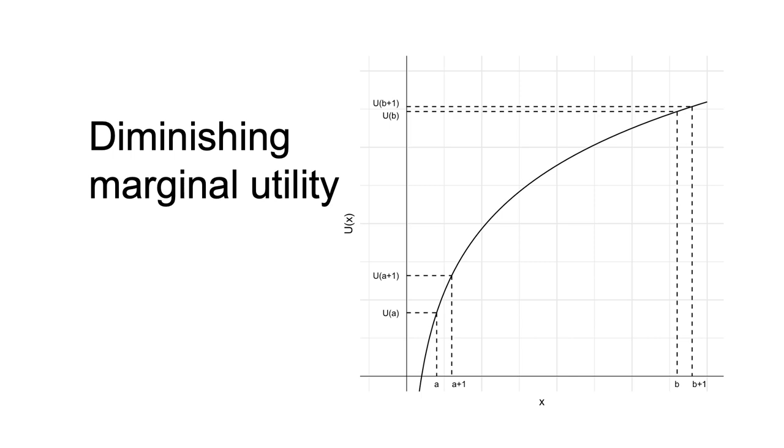Diminishing marginal utility will lead to convex indifference curves. However, the reverse relationship does not always hold.